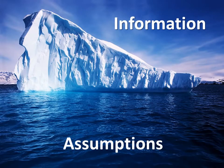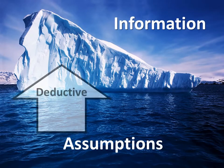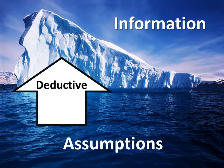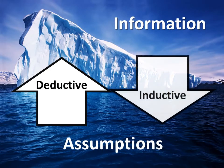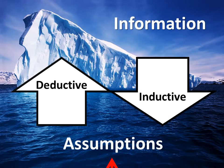When we think critically, we can start from assumptions and move to what we know for sure — deductive reasoning. Or we can start from what we know and move to assumptions — inductive reasoning. When assumptions are proven to be true, they become information. Assumptions are what we presume without evidence.